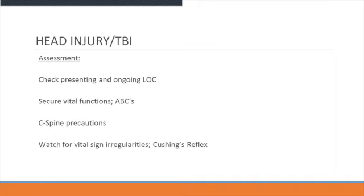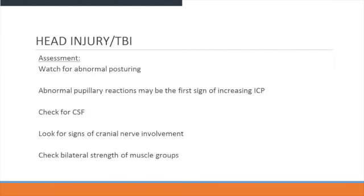Your assessment should check the presenting and ongoing level of consciousness, serial vital signs, and ABCs. Use C-spine precautions. Watch vital signs for irregularities and look for signs of Cushing's reflex. Watch for abnormal posturing, look for abnormal pupillary reactions — which may be the first signs of increased ICP — and check for CSF leakage. Look for signs of cranial nerve involvement and check bilateral muscle group strength.